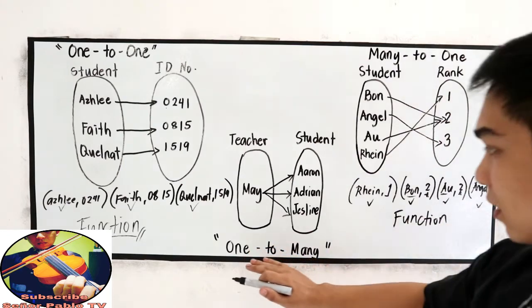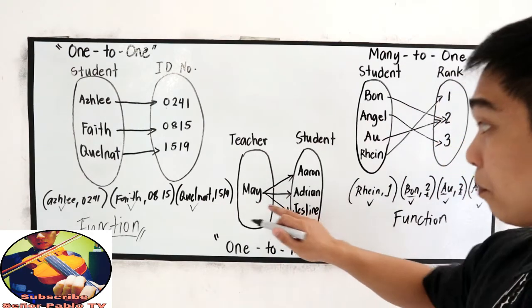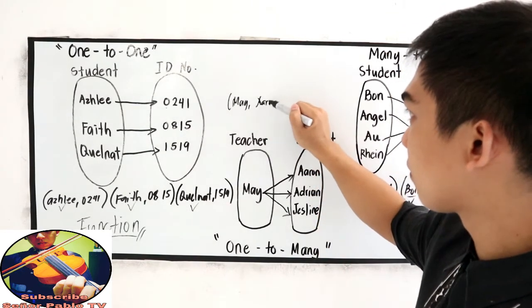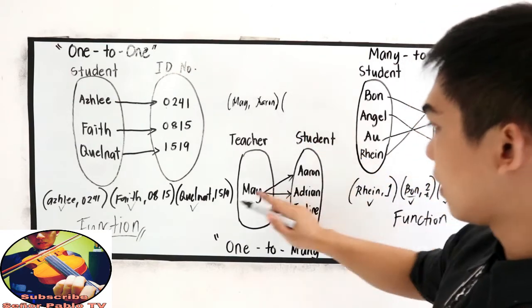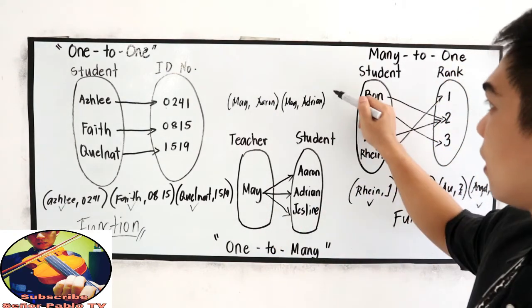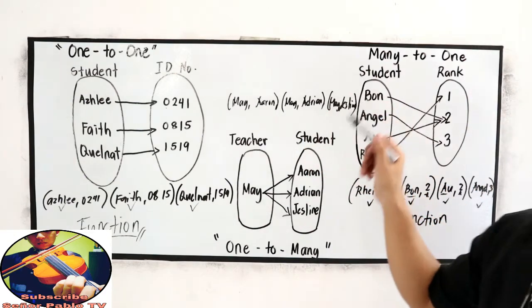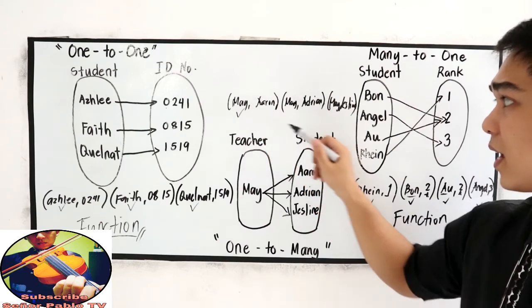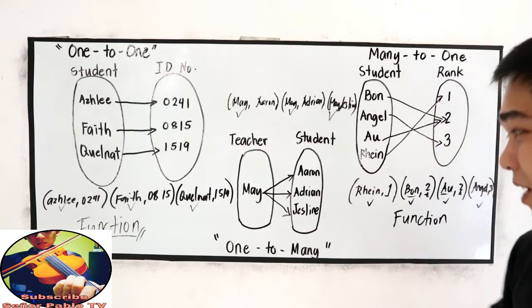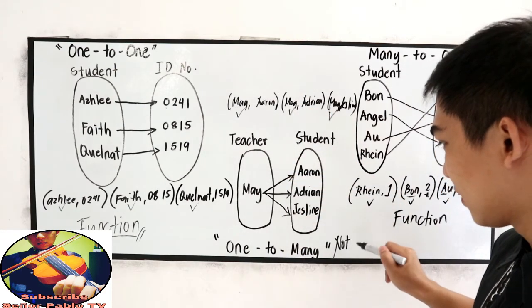How about in our one-to-many correspondence? So, let's write as ordered pairs. May, Aaron. May, Adrian. And may, Jess Leanne. Look at our domain. Our domain is May, May, and May. That is, repeated thrice. That means, one-to-one correspondence is not a function.